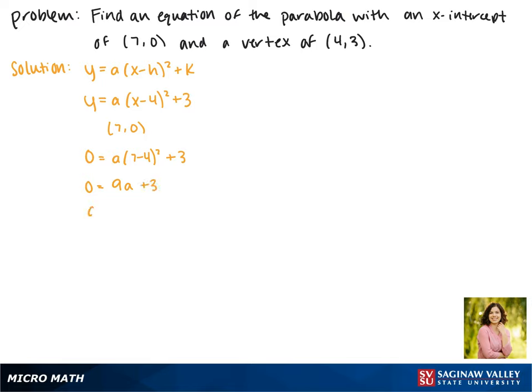Moving 3 to the other side we get 9a equals negative 3. Dividing by 9 we get a equals negative 3 ninths, which when we reduce it gives us negative 1 third.